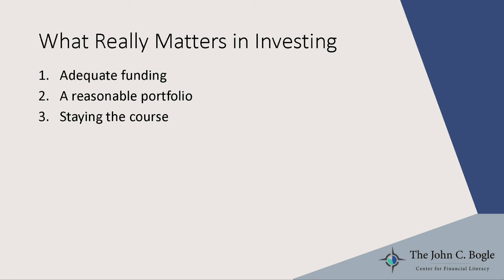You want at least three asset classes as a general rule. What really matters in investing if you want to reach financial independence: fund it adequately. It's less important what's in the account than how much you put in — that's what really matters, and the younger you are, the more it matters. Your savings rate matters most. After that, a reasonable portfolio and sticking with it.